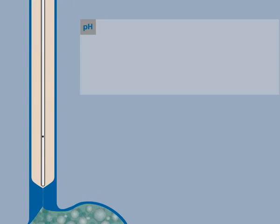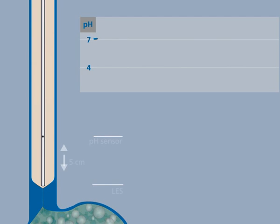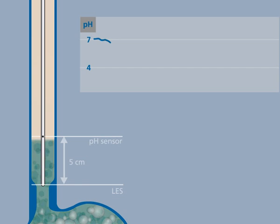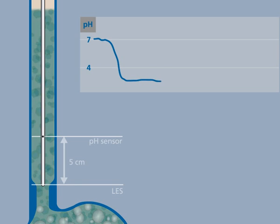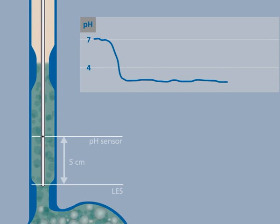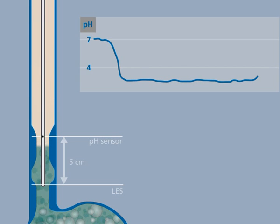Until recently, reflux was detected by measuring the pH in the esophagus. When acidic material enters the esophagus, the pH drops. With pH monitoring, the proximal extent of gastric content cannot be detected. pH studies can only detect acidic reflux episodes.